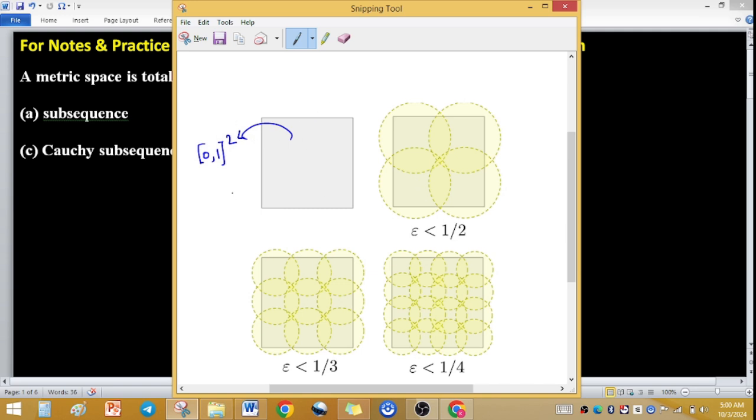Now I have taken the epsilon of 1/2 less. So totally bounded is that the set, the unit square, should be covered by a finite number of open balls.